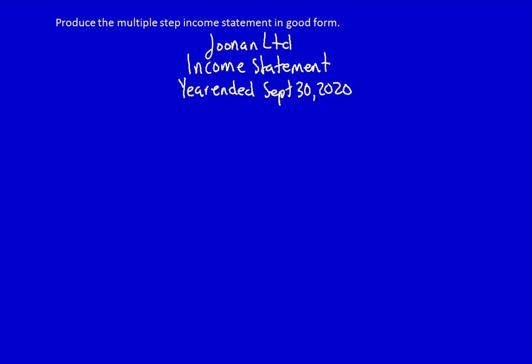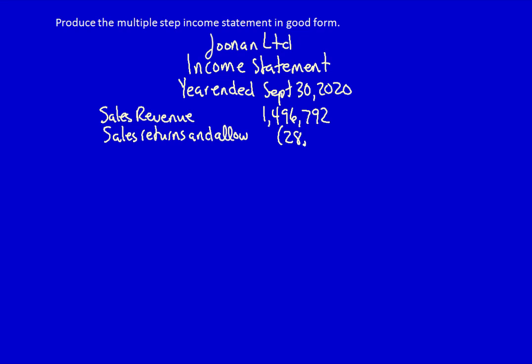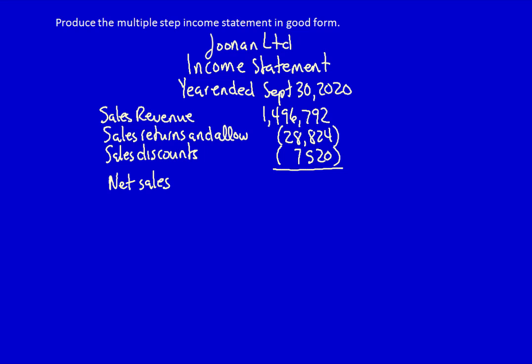In this case we don't have a starting title called revenues — we simply start with sales revenue, which was $1,496,792. None of the numbers are going to change; what we're going to change is how we put them together. We deduct sales returns and allowances ($28,824) and sales discounts ($7,520) because both reduce the amount available with regards to revenue. This provides us with net sales, always calculated as sales revenue minus sales returns and allowances minus sales discounts. The total is $1,460,448.